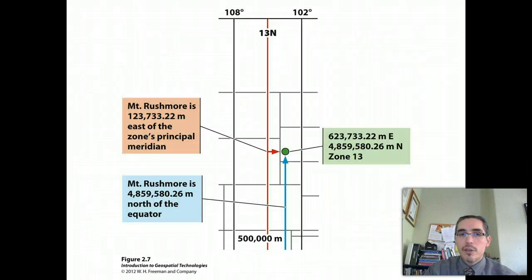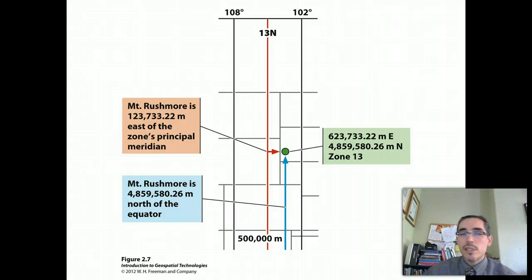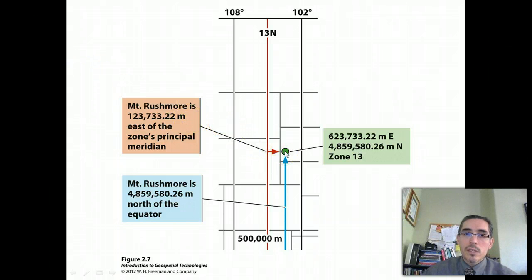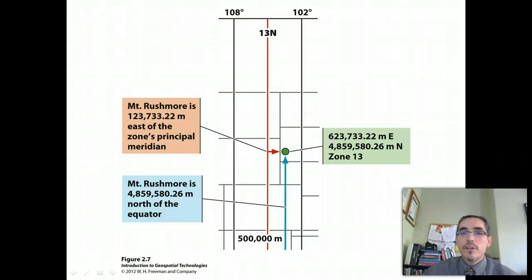Let's work with an example. We're looking at one zone in South Dakota and trying to describe the location of Mount Rushmore. We measure the position of that point relative to our false origin, sitting on the equator some distance to the west — the origin sits outside the zone of interest. When describing positions in UTM, we always describe the easting first. In this case, the point is 123,732 meters east of the central meridian. Since the central meridian is always 500,000 meters east of the origin, adding those gives us 623,733.22 meters east.